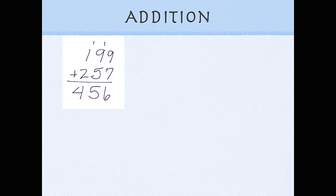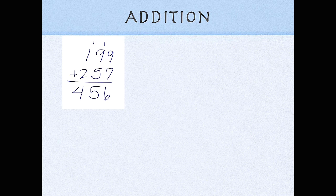When you see a problem like 199 plus 257, and the only way you can solve that problem is to line up the numbers and use this algorithm that we were taught in school, then you should be mad.